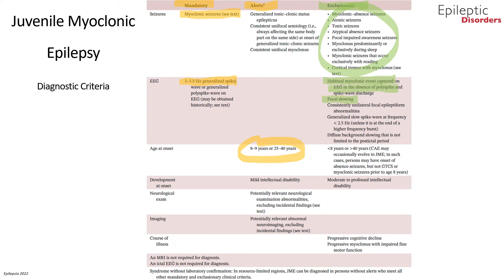Additional exclusionary criteria for JME include focal slowing, consistent unilateral focal epileptiform discharges, and generalized spike-wave activity less than 2.5 Hz. An age of onset less than 8 years or greater than 40 years should also exclude the diagnosis of JME.